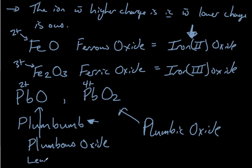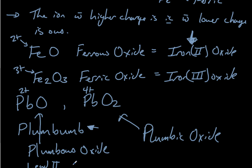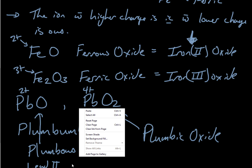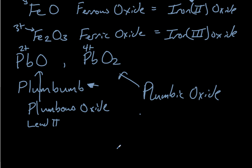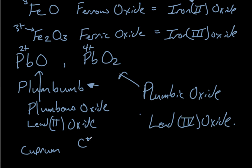And this guy must be plumbic oxide. Also known as lead two oxide. And lead four oxide. And then copper is cuprum. So the Cu+ is cuprous. And the Cu2+ is cupric. And depending on what it's attached to, you can go. Or, in the modern system, copper one and copper two.